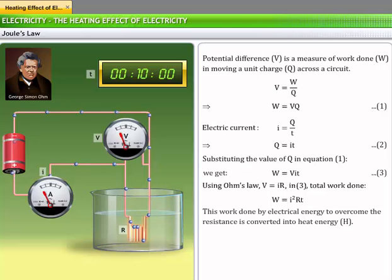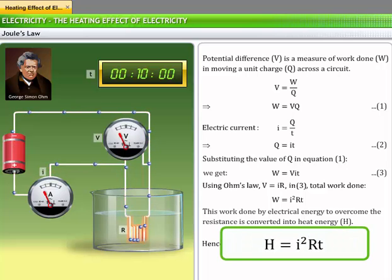The total work done by electric current W is equal to I square RT. This work done by electric current to overcome the resistance of a conductor is converted into heat energy, which is represented by H. Hence, H is equal to I square RT.